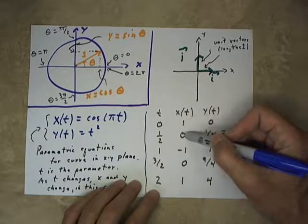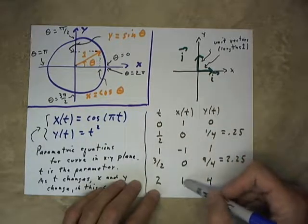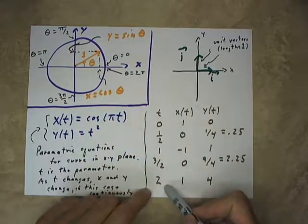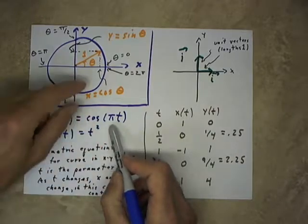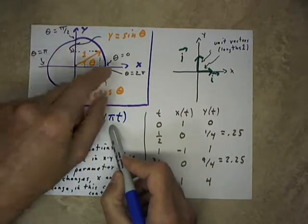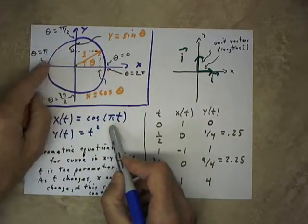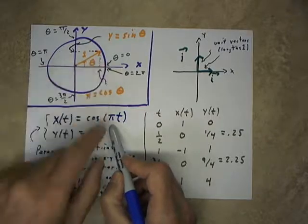So we see that our values of x(t) go from 1 to 0 to negative 1 to 0 to 1, and we can simply, once we see how these values of t work, we can simply see that as we move around the circle, our x-coordinate goes from 1 to 0 to negative 1 to 0 to 1.